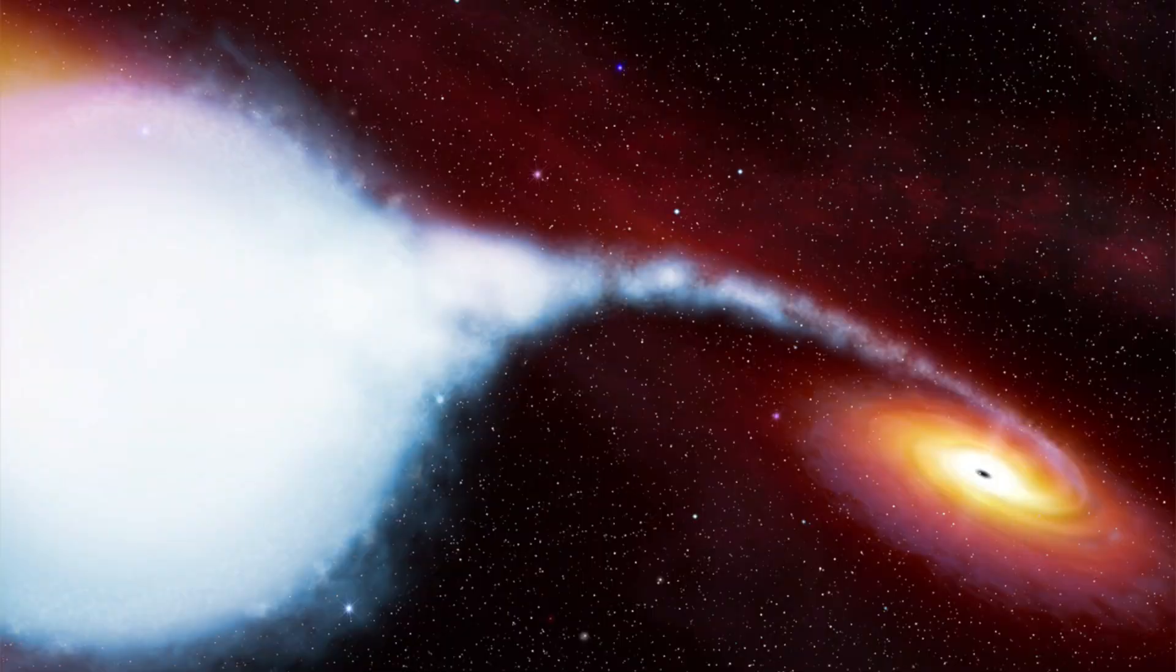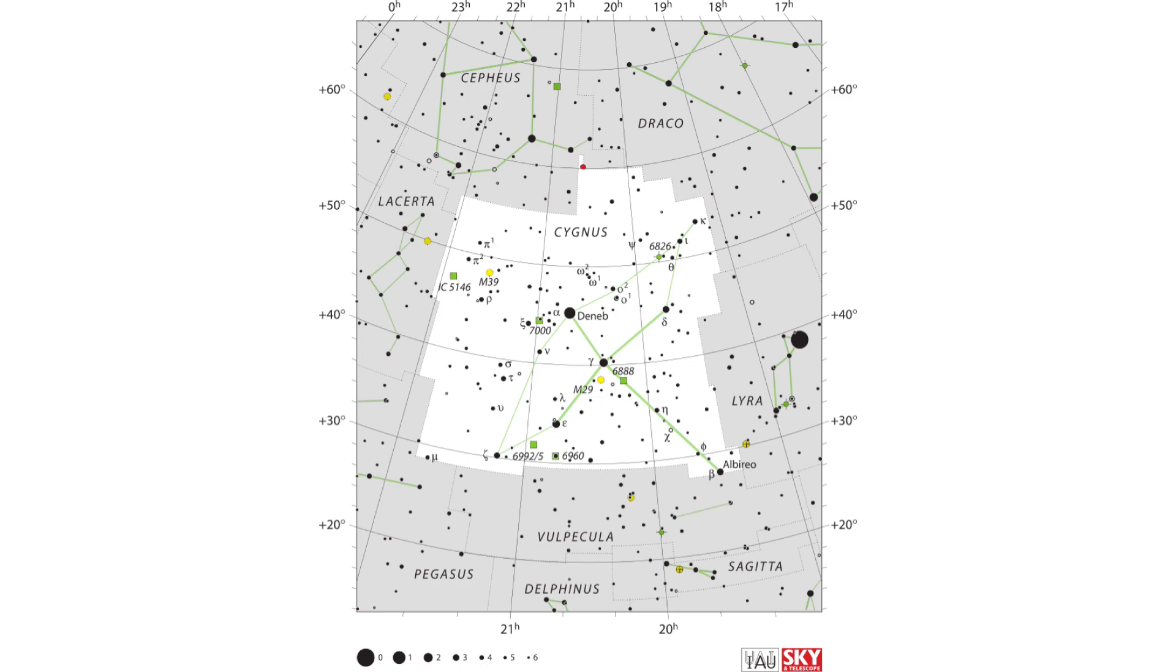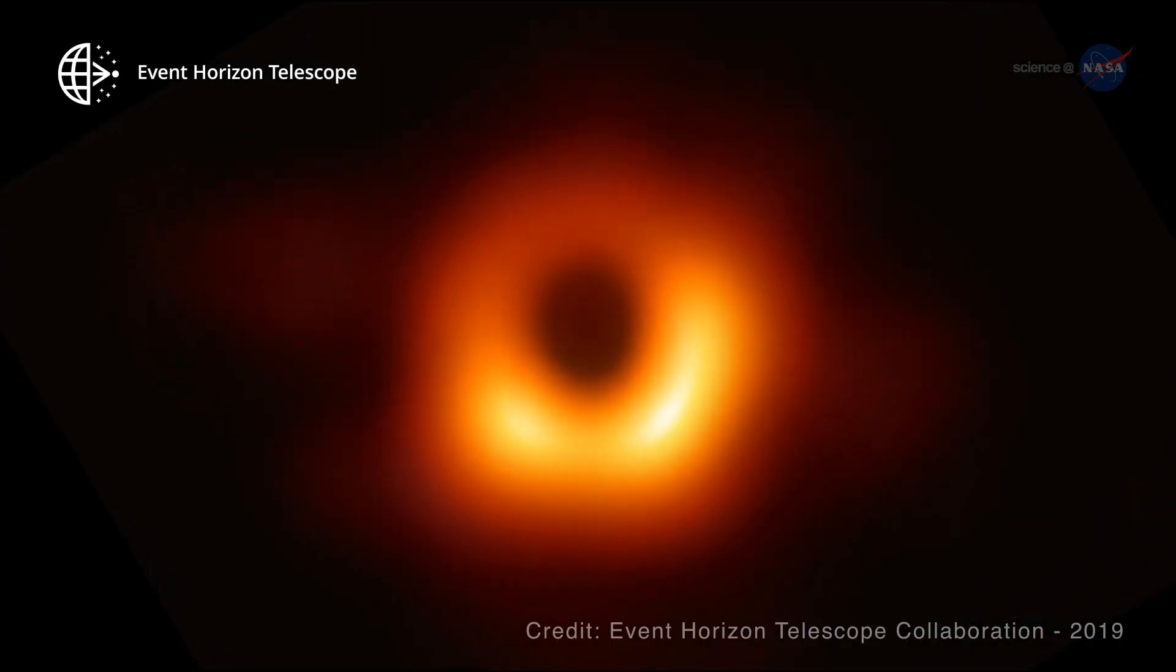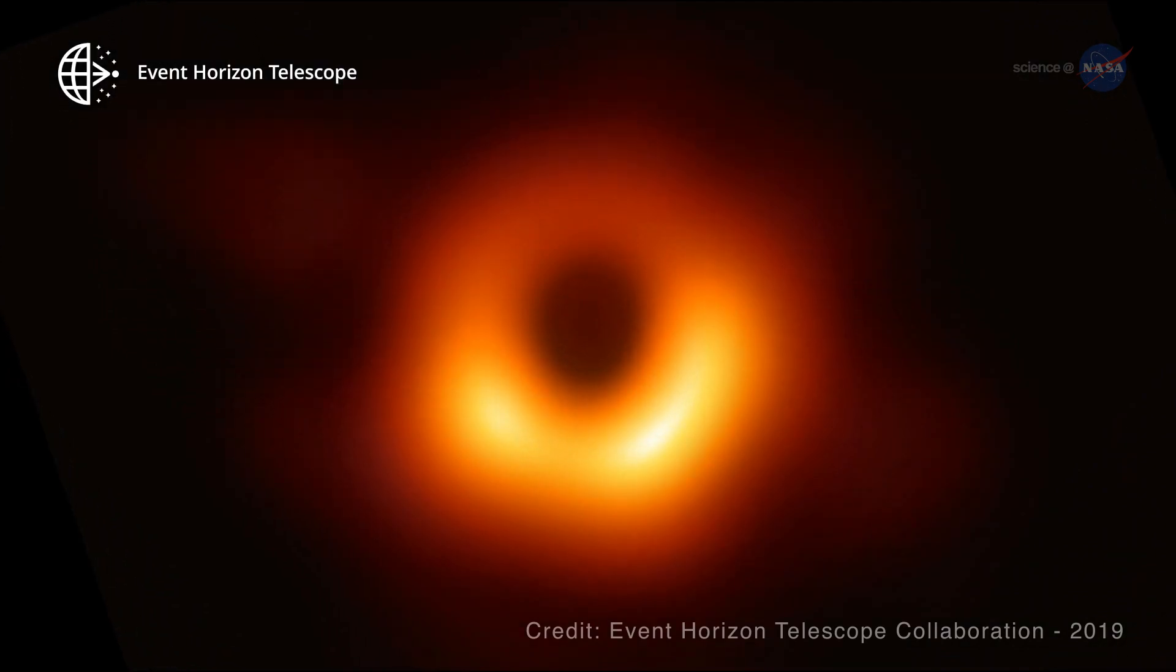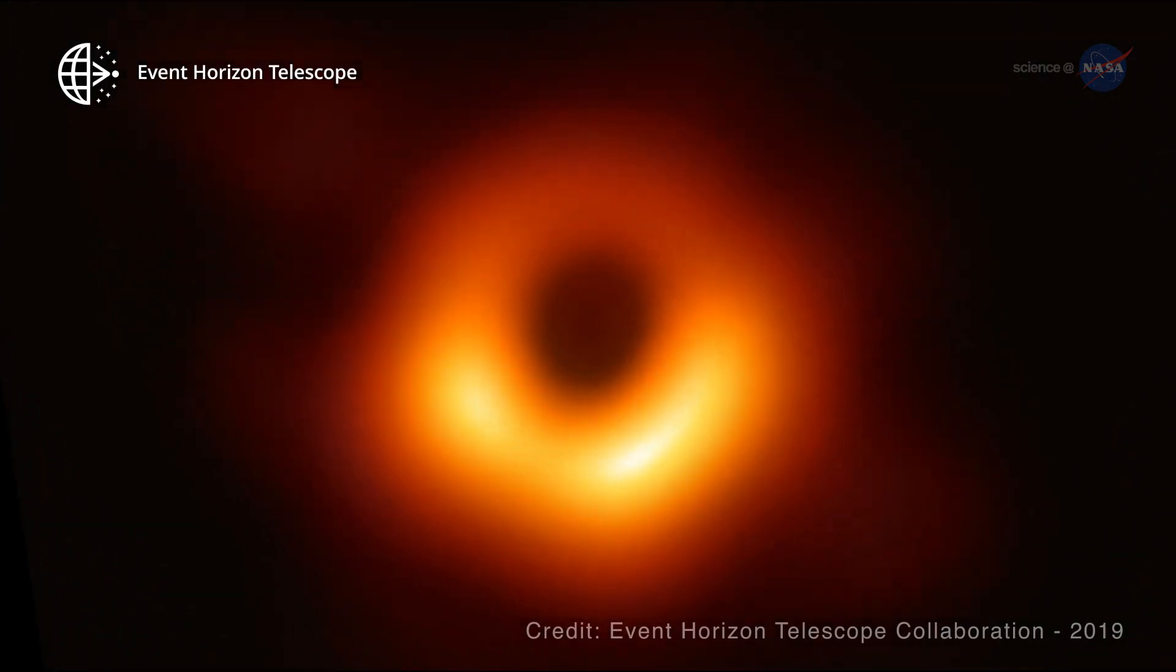The first black hole identified was Cygnus X-1 in 1971. Because light cannot escape a black hole, it's naturally invisible unless there is light from behind it, in which case it bends around the black hole. In 2019, scientists released the first ever image of a black hole, as you can see here.